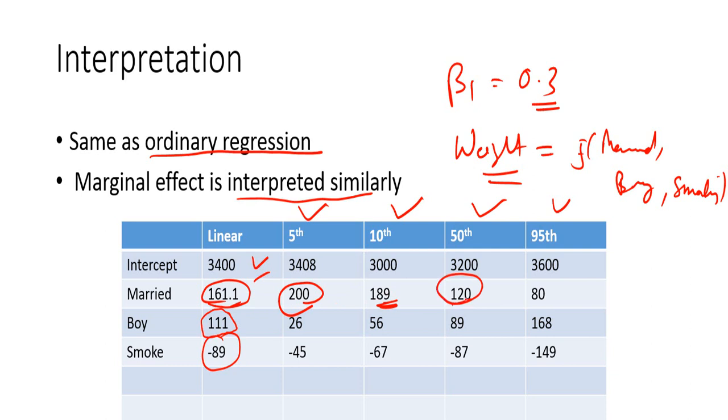For the 50th quantile, it's 120. The difference is 120. That means the linear regression is overestimating. And similarly for 95th quantile, it's 80, which is again, the linear regression is overestimating for 95th quantile.